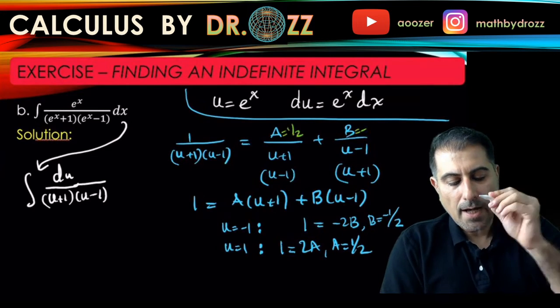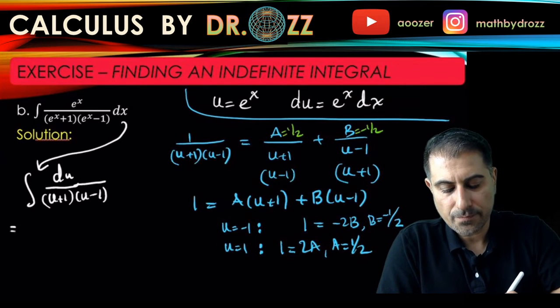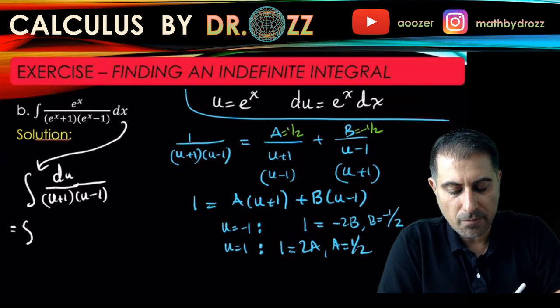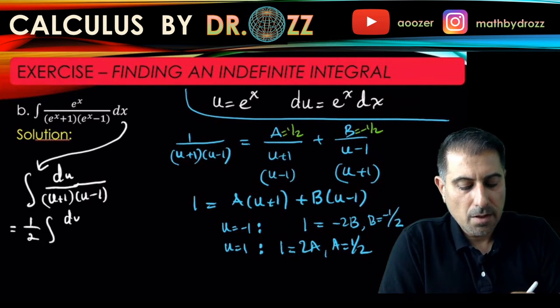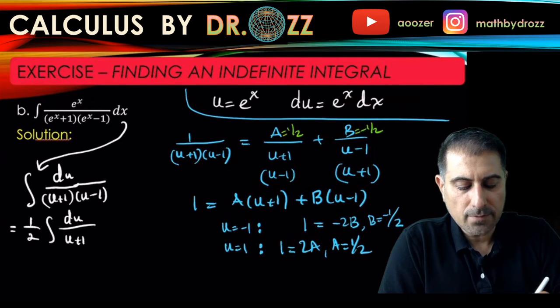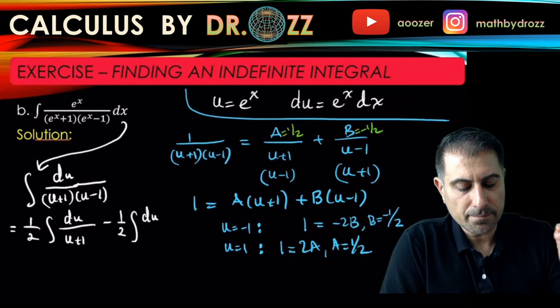So now I can write this integral as, maybe factor the 1/2 out: du over (u+1) minus 1/2 du over (u-1).